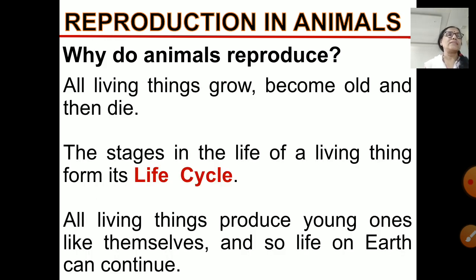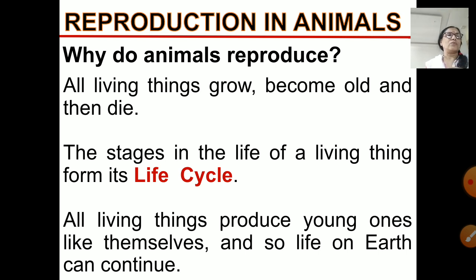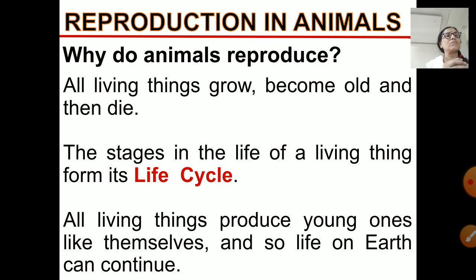As I told you, all living things are born, they grow, they become old, and then ultimately they die — and this forms their life cycle. Different animals have different life cycles with different stages of development. They produce their young ones either by laying eggs or by giving birth to babies, so that life on the earth can continue. This is reproduction.